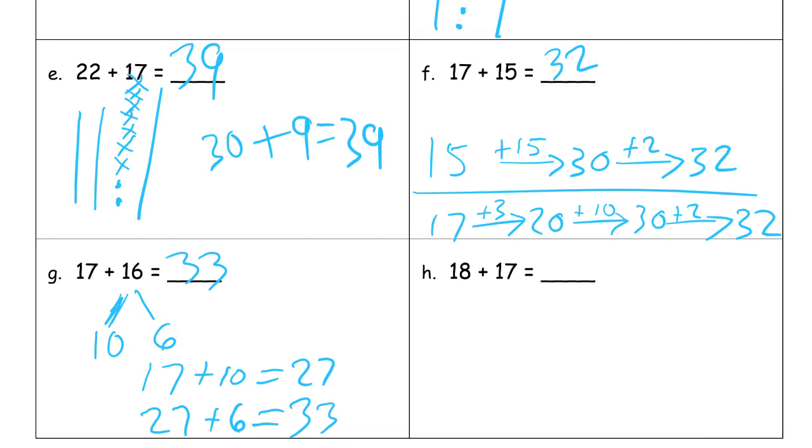And then we have 18 plus 17. We just did 17 plus 16, and 18 is 2 more. I could use what I just learned from that. I could use the arrow way for this and say, well, I know 17 plus 16 is 33, and then add 2 more to get 35. That's a neat little shortcut if you notice how some of these setups go into each other. Here's 17 plus 15 up here, and then 17 plus 16, and now 18 plus 17.